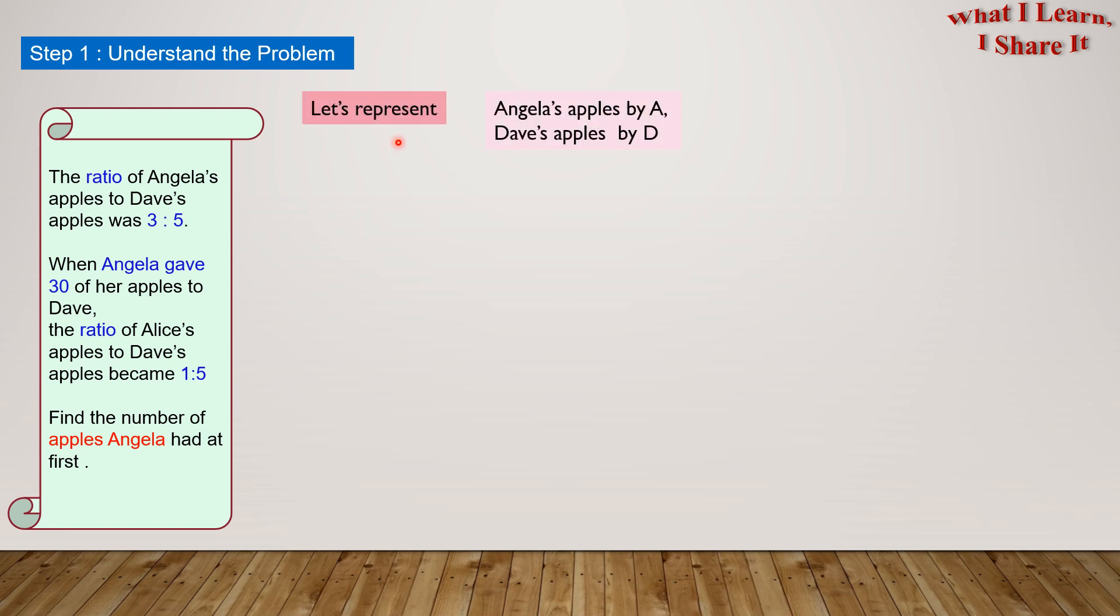In this problem, since we have to deal with Angela's apples and Dave's apples, it will become easier if we choose some letters to represent them. Let's represent Angela's apples by A and Dave's apples by D.